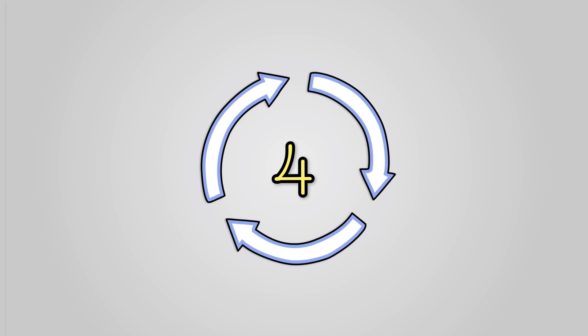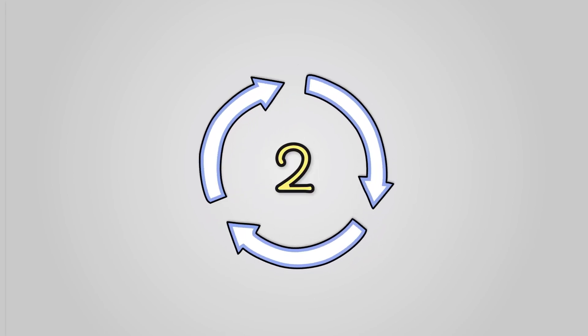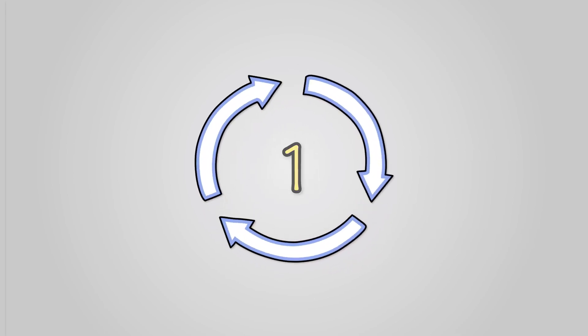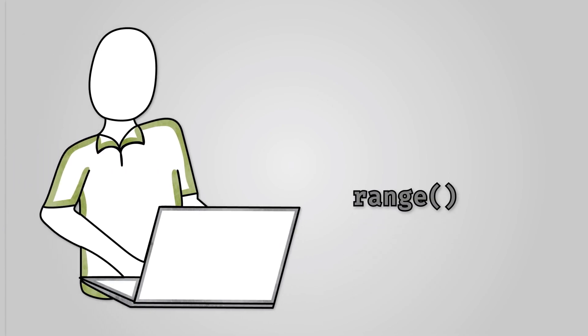You could also count down by starting with a high number and taking a number away each loop. Using the range command if you specify three numbers you get the start, the end and the step. The step is by how many the numbers go up or down.